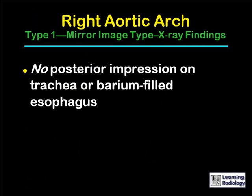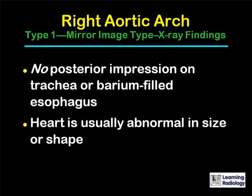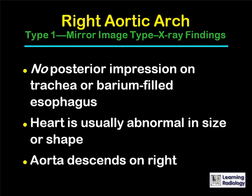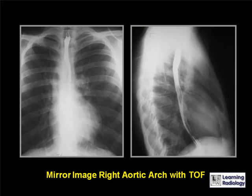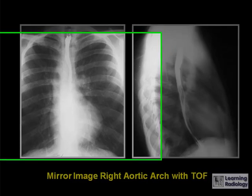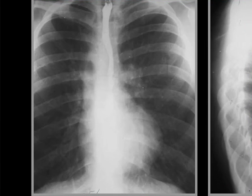There is no posterior impression on the trachea or the barium-filled esophagus by a mirror image aortic arch. The heart is usually abnormal in size or shape because of the presence of congenital heart disease, and the aorta descends on the right. This is an example of a mirror image right aortic arch in a patient with tetralogy of Fallot — an adult. You can see that the arch is on the right side and displaces both the barium-filled esophagus and the air in the trachea toward the left. The heart has an abnormal shape produced by elevation of the apex by right ventricular hypertrophy.